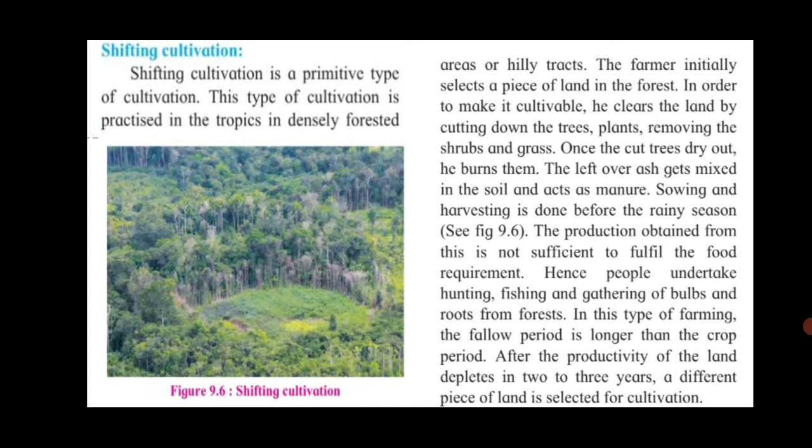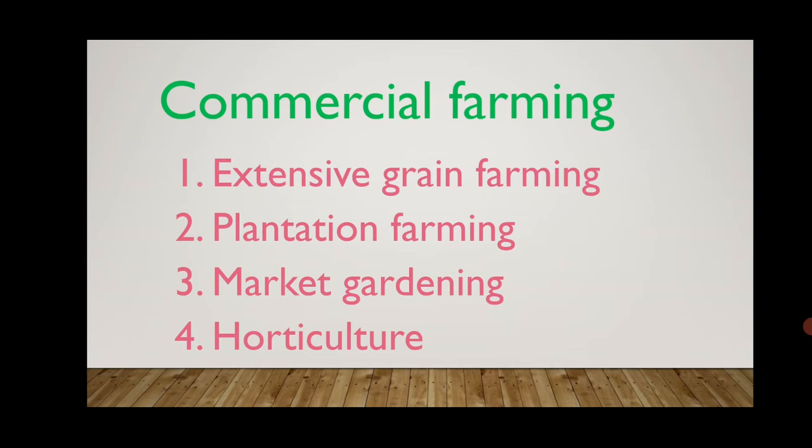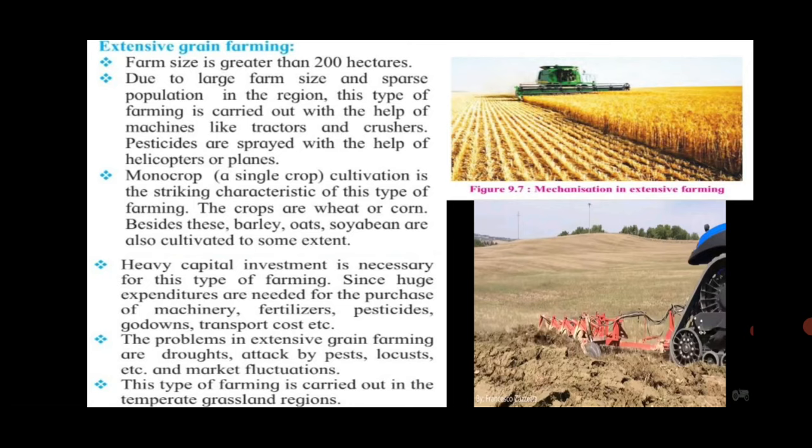Intensive farming and shifting cultivation are the two categories which come under subsistence farming. Subsistence means sufficient only for one's use. Next, we shall learn about commercial farming. Commercial farming is subdivided into four categories: extensive grain farming, plantation farming, market gardening, and horticulture.